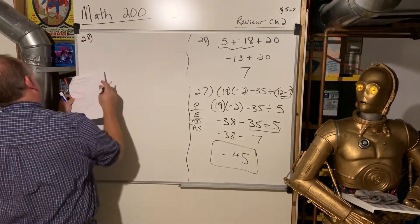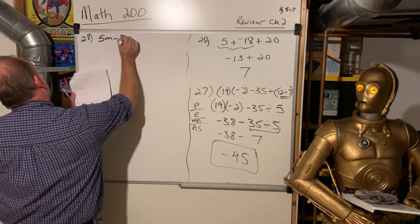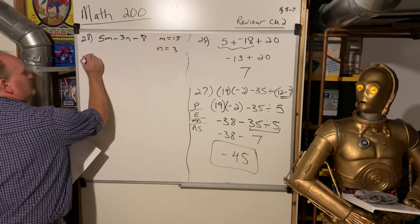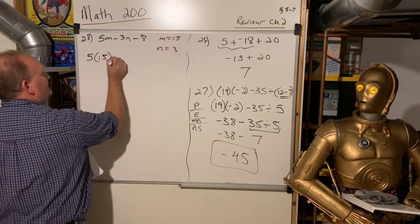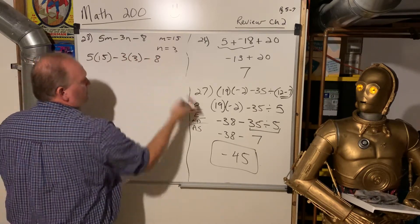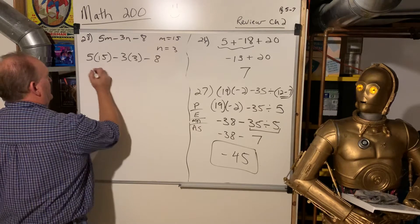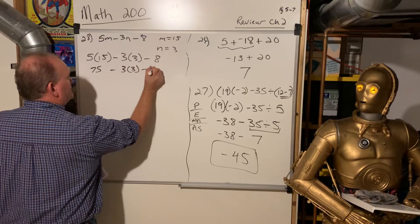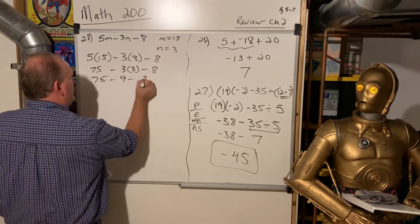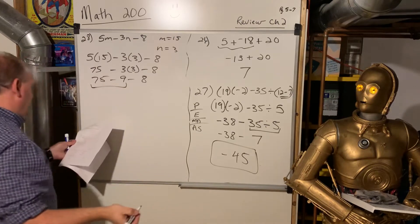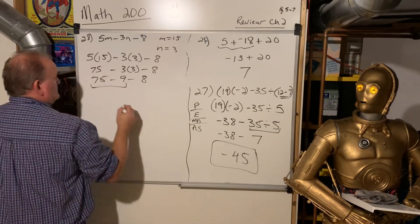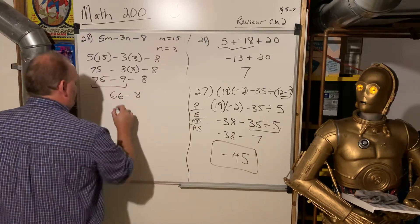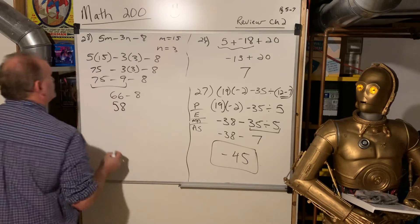All right. 28. 5m minus 3n minus 8. When m is 15 and n is 3. So you're just subbing in. 15 and 3. And now you're doing order of operations. So we're going to multiply. And let's see. What is that? 75 minus 3 times 3 minus 8. 75 minus 9 minus 8. 75 minus 9 is 66 minus 8. And then 66 minus 8 is 58. There we go.